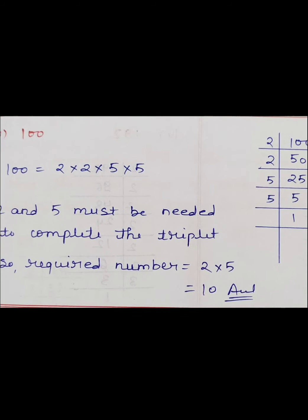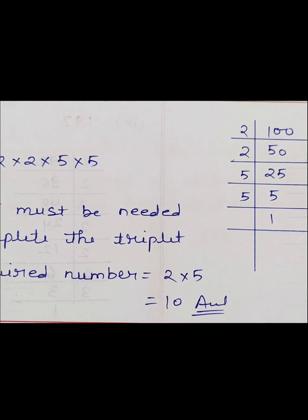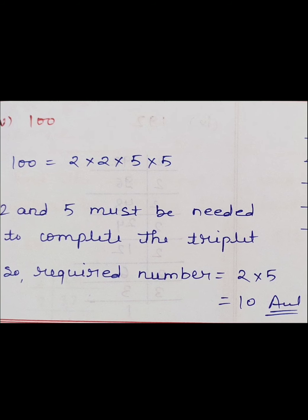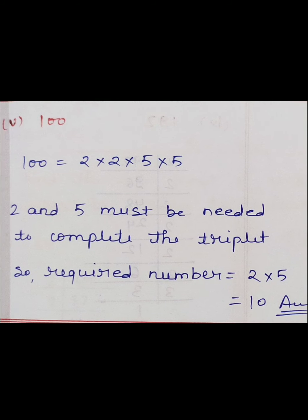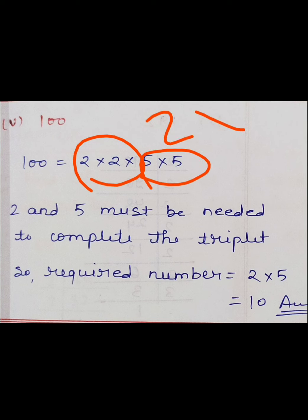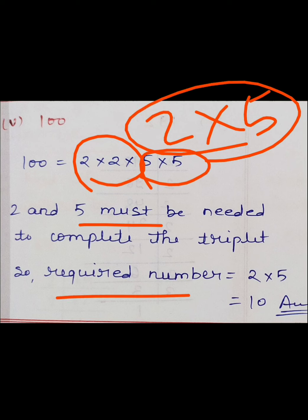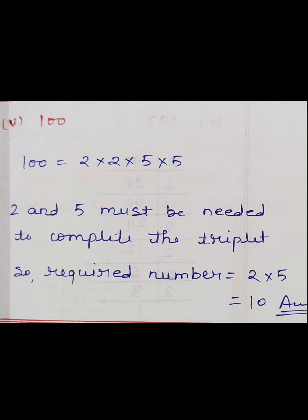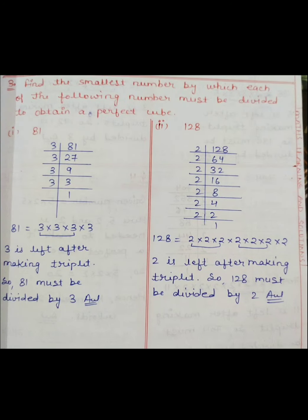Last one is 100। 100 के prime factors: 2 बार 2 और 2 बार 5। 2 का भी triplet complete नहीं, 5 का भी complete नहीं। आपको एक 2 चाहिए 2 का triplet complete करने के लिए, और एक 5 चाहिए 5 का triplet complete करने के लिए। 2 and 5 must be needed, so required number is 2×5=10। 100 में 10 multiply करने पर perfect cube बनेगा।